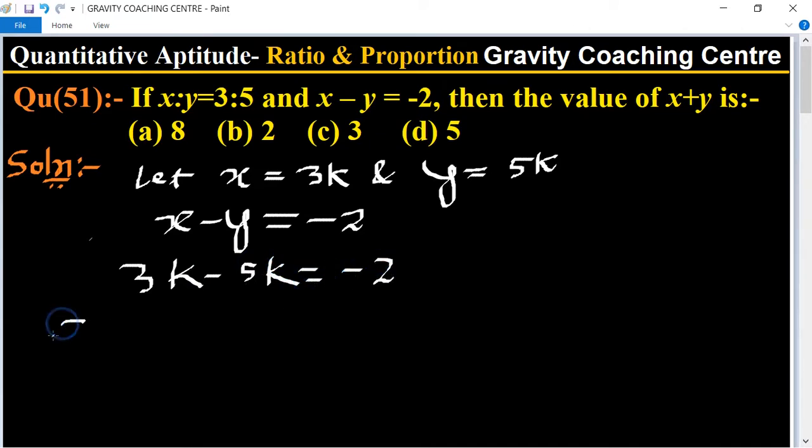This implies that minus 2k equal to minus 2. The minus signs cancel, therefore k equal to 1.